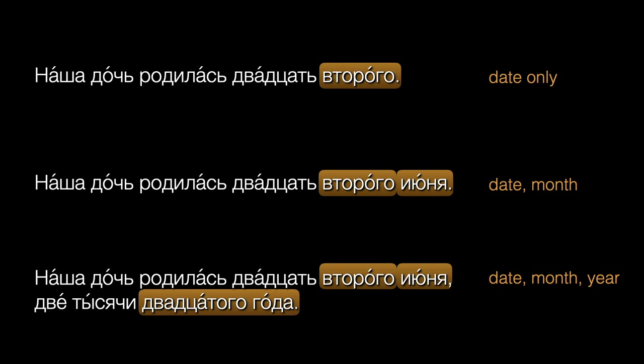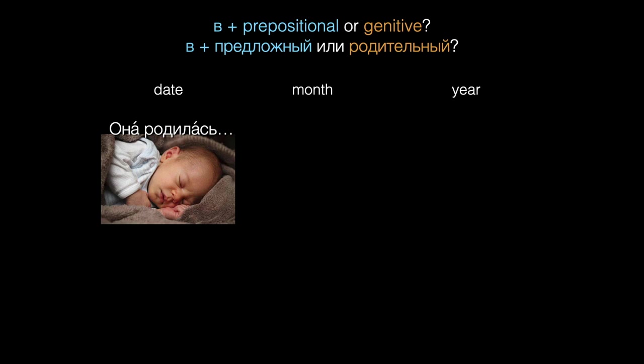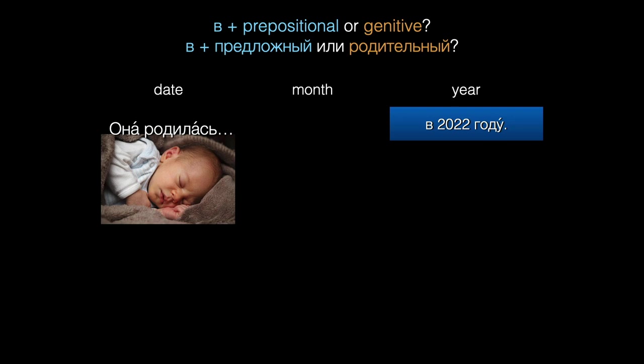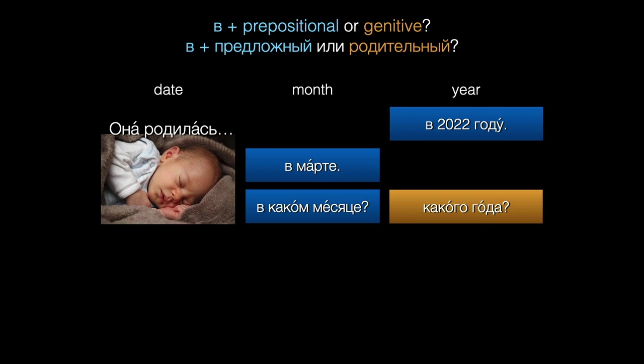To sum up, here's a quick overview of dates. When we say only what year something happened, we use в with the prepositional: она родилась в две тысячи двадцать втором году. When you mention just the month, use в with the prepositional: она родилась в марте. When we mention the month and the year, use в with the prepositional for the month and genitive for the year: она родилась в марте две тысячи двадцать второго года. And after that, it's simpler — whenever we mention the specific date, everything will be in the genitive.